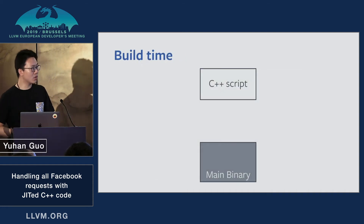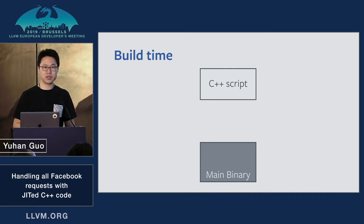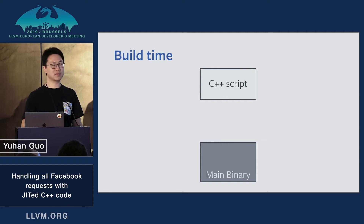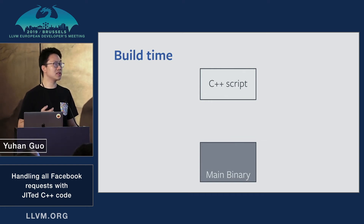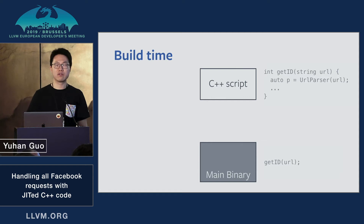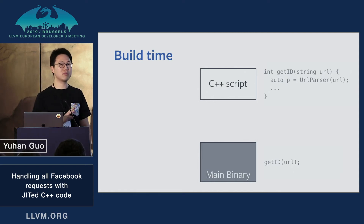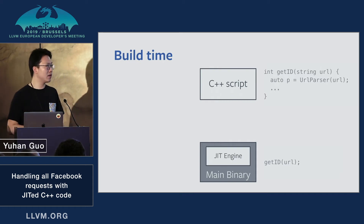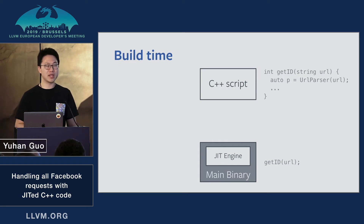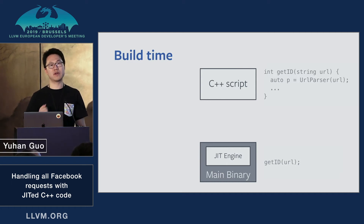But how does that work? We have a big main binary containing all the C++ core stack code. We want to write the business logic in C++ directly as a script. So imagine you want to extract an ID from a URL — in the main binary you call that function, but the actual implementation is defined in the C++ script. We can update this part frequently without modifying the main binary, by developing a just-in-time compiler engine inside the main binary that takes the C++ script at runtime and converts it into final executable code, mapping everything together in the main process.